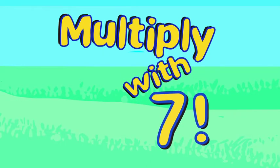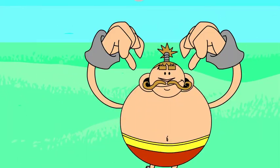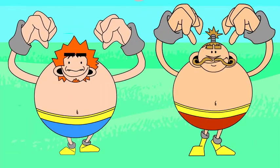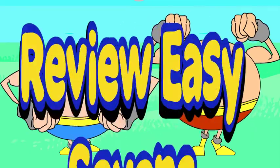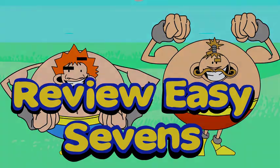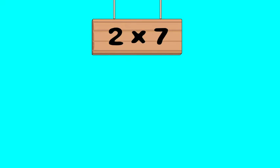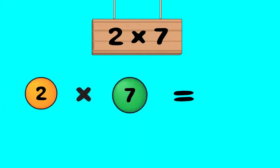Multiply with seven. Review the easy sevens. You probably already know a lot of your times seven facts. Two times seven, of course, two groups of seven is fourteen.